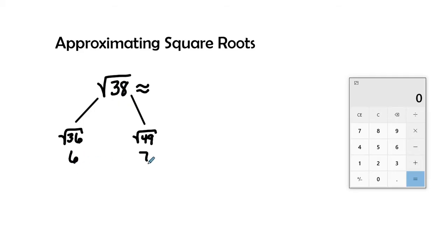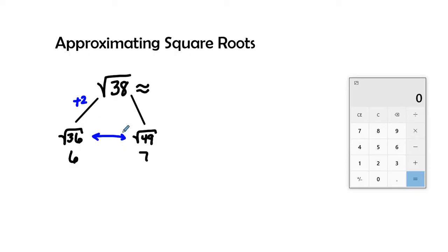The next step in finding the approximation is to find the distances. What is the distance between 36 and 38? That is 2 — so our numerator increases by 2. And what is the distance between our two perfect squares? We find that 49 minus 36 is 13, so that becomes our denominator.